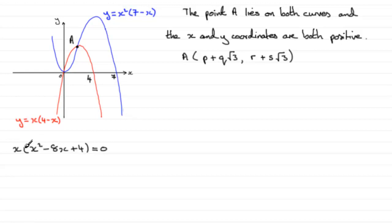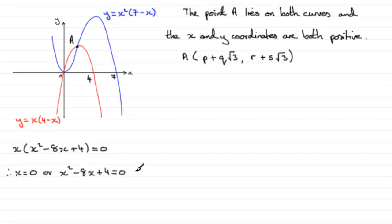So we know that we're looking to solve this equation. Because it's already factorized and equals 0, we can say either factor equals 0 — so x equals 0, or the quadratic factor x squared minus 8x plus 4 equals 0. At point A, x can't equal 0 because it's a positive value, so we know that x squared minus 8x plus 4 must equal 0.